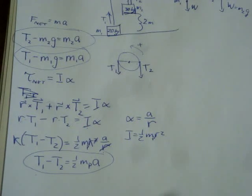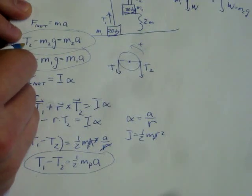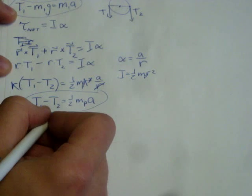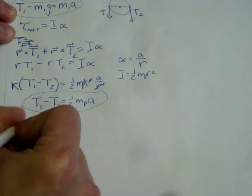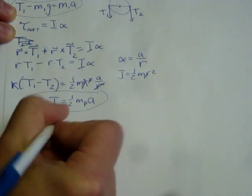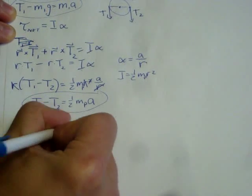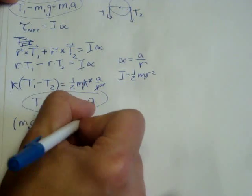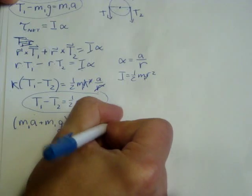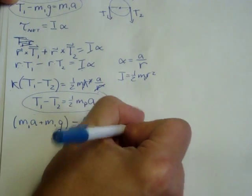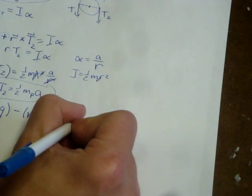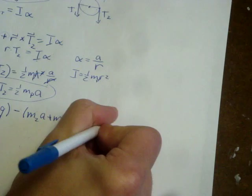So then we kind of use those, we plug those all together. Probably the quickest way to do that is to just plug in for T2 and T1 into this third equation. So we take T1 as being M1 times A plus M1G. And then we minus T2, which T2 is M2A plus M2G. And yeah, we just plug each of those in. And then that's going to be equal to one half the mass of the pulley times its acceleration.